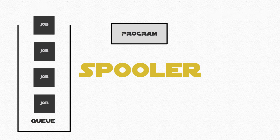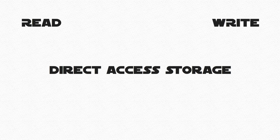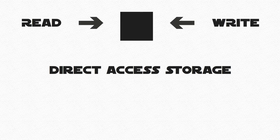A good spooler should let you cancel or change the order of documents. Direct access storage are devices that read and write to a specific place, and we shall discuss the three main categories that are very well known.